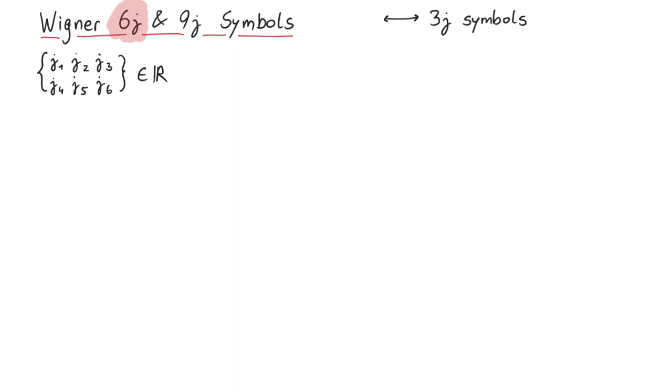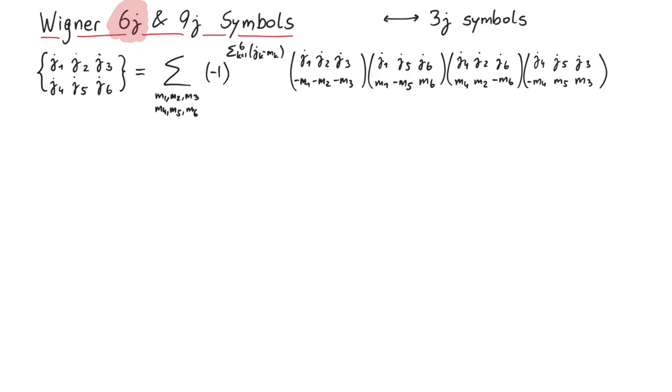Speaking of 3j symbols, one can define this 6j symbol via the sum over four distinct 3j symbols, like this. Since the entries of every single 3j symbol have to fulfill several relations, like the triangle relation, the existence of such a 6j symbol is rather restrictive.